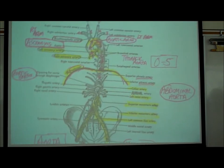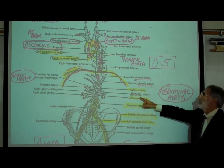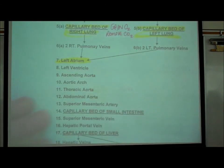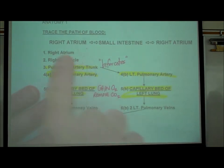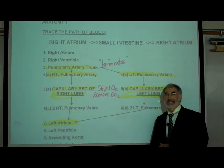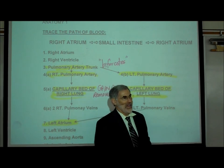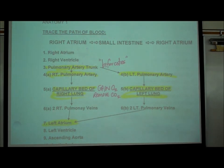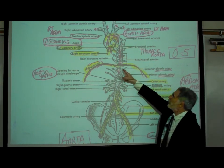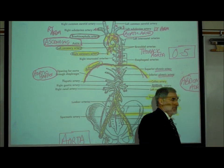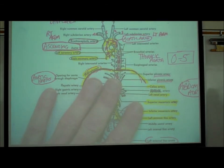Here on page 05 is this huge aorta. The map quest destination is the small intestine. Which turn-off do we take off the aortic freeway? Not the coronary arteries — that takes us to the heart. Not the brachiocephalic and right subclavian — that goes to the right arm. Not the carotid arteries — that goes to the head.